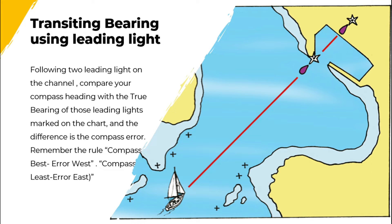For transit bearing using a leading light: by following two leading lights on the channel, we can compare the compass heading with the true bearing of the leading light marks on the chart. The difference is the compass error. Remember the rule: compass best, error west; compass least, error east.